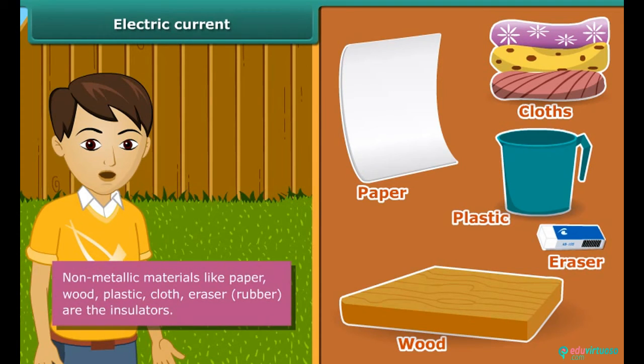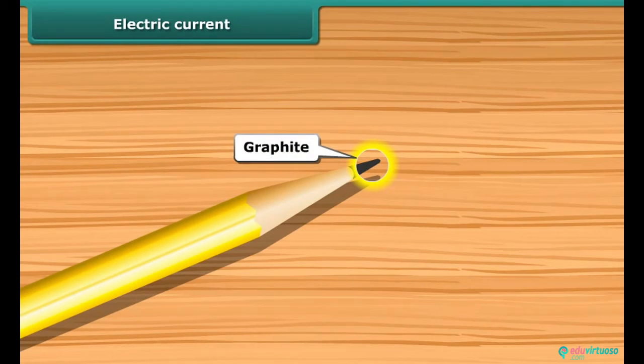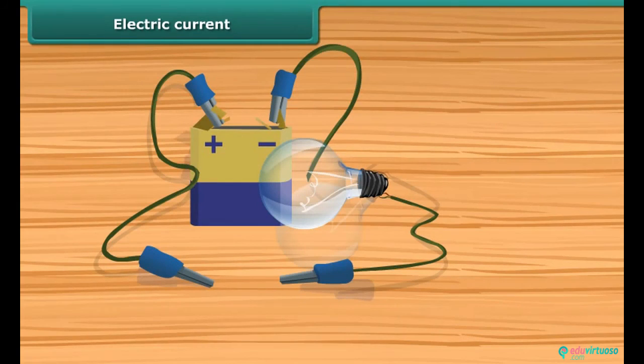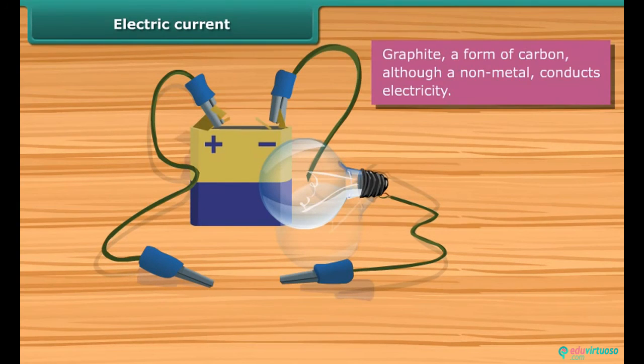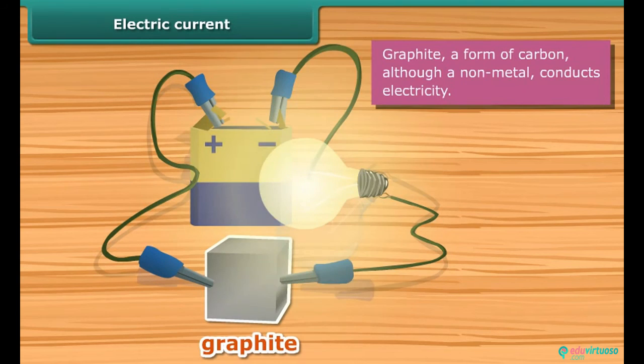Pencil lead is made of graphite. It is a form of carbon. It is a non-metal but it is a conductor of electricity. It can be tested whether a given material is a conductor of electricity or not. Place the given material between the free ends of wires in an electric circuit. Bring the free ends of the two wires close, now let them touch each other. If the bulb glows, the material is electrically conducting; otherwise it is an insulator.